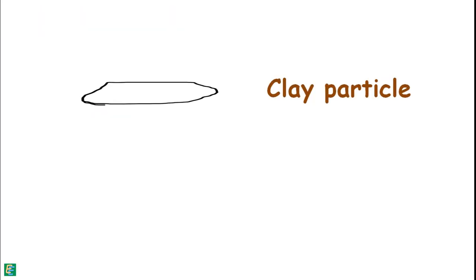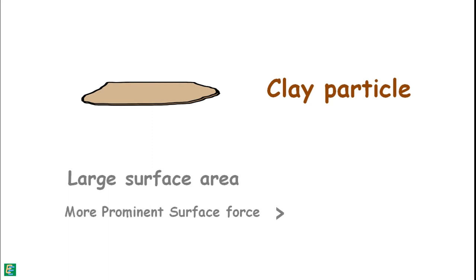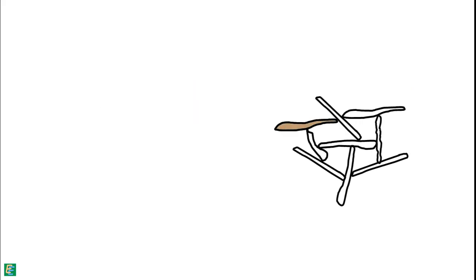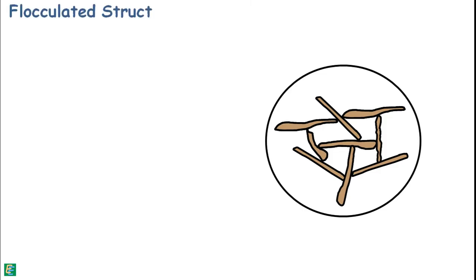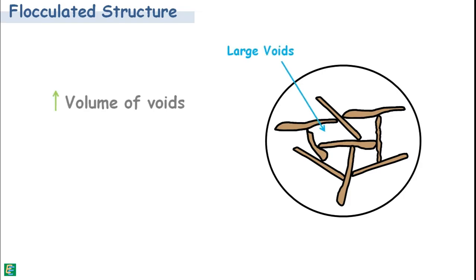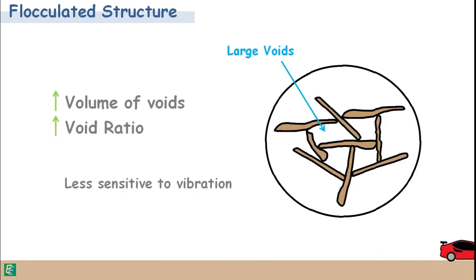Clay particles are very small, flaky in shape, and have a large surface area. Because of that, their surface forces are more prominent than gravitational force. These particles have a negative charge on the surface and a positive charge on the edges. They combine with each other by joining the negative surface of one particle to the positive edge of another. This way, they form a soil structure called flocculated structure. Soils with flocculated structure have a large amount of voids, so their void ratio is high. These soils are less sensitive to vibrations as they form a strong electrical bond.